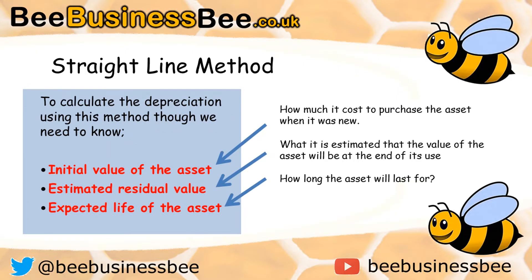To calculate the straight line method of depreciation, we need to know three pieces of information. We need to know the initial value of the asset — so how much did it cost to purchase that asset when it was brand new? We also need to know the estimated residual value, which means how much it is estimated to fetch at the end of its lifespan.